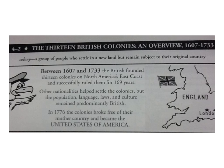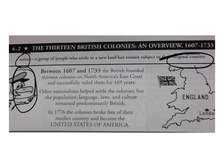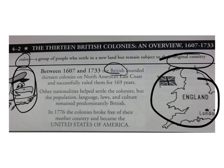First of all, I want to make sure that we all understand that a colony is a group of people who settle in a new land but remain subject to their original country. So, if this bird over here represents the colonies in America, then over here we've got England — the original country. We're going to call that the mother country. The mother country of England, which we could call Great Britain, founded 13 colonies on North America's east coast and successfully ruled them for 169 years.